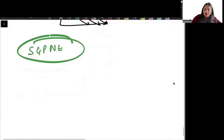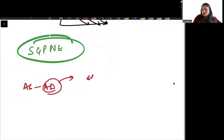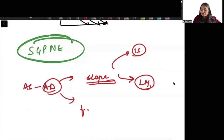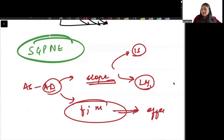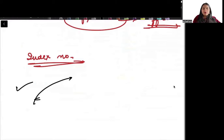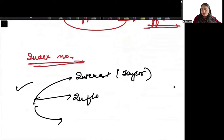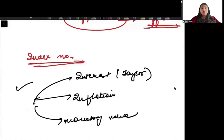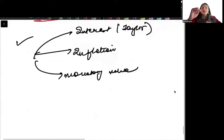Regarding the AS-AD model, know the slope of the AD curve and how it is affected by IS and LM curve slopes. Be well aware of fiscal and monetary policy multipliers and when they are effective. Index numbers can also be asked. Be aware of the three kinds of policies: interest rate policy (Taylor rule), inflation targeting policy, and monetary rule policies.